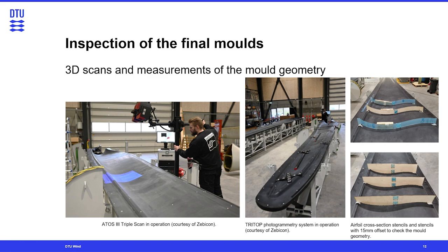After mold manufacturing, the final molds are ready for inspection. We scan the molds or measure the mold geometry to ensure the final molds match the intended design, identify any geometric deviations, and possibly make adjustments or repairs so that the mold is within the specified tolerances.